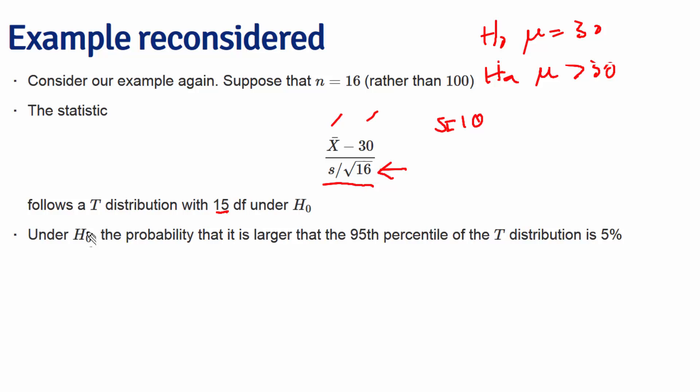Under the null hypothesis, the probability that it's larger than the 95th percentile of the t-distribution is 5%, so we need to calculate that percentile. This can be done with qt 0.95 and 15 degrees of freedom, which works out to be 1.7531.